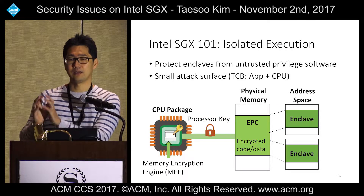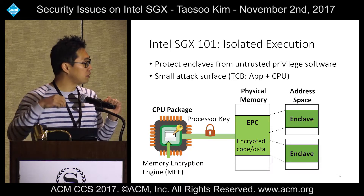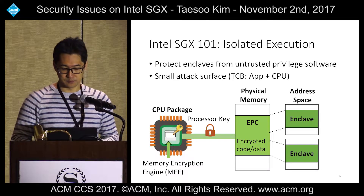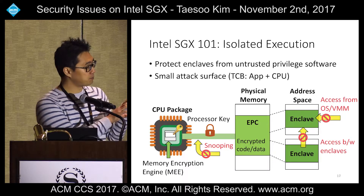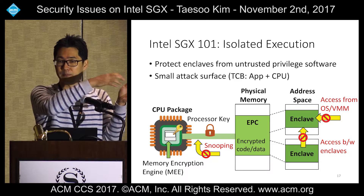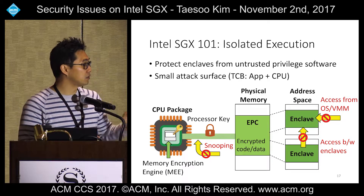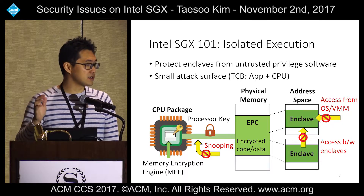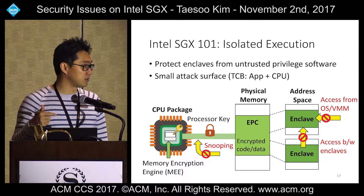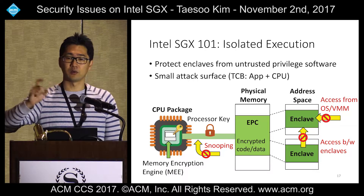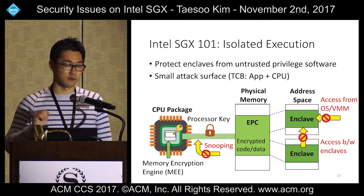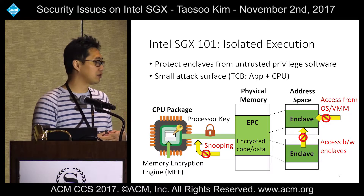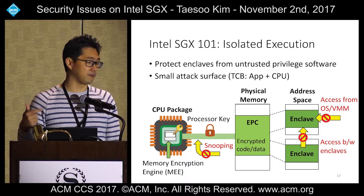Isolated execution is essentially an encrypted physical memory region called the EPC. All memory traffic from the CPU to this physical memory region is encrypted. When launching an enclave, physical pages are multiplexed to user space — multiple enclaves can utilize the physical memory. This isolation prevents access from a virtual machine monitor, operating system, other enclaves running in different virtual address spaces, and hardware launching DMA attacks cannot snoop the memory traffic.